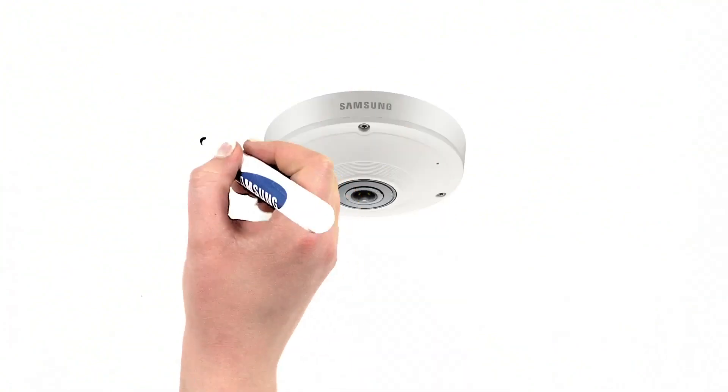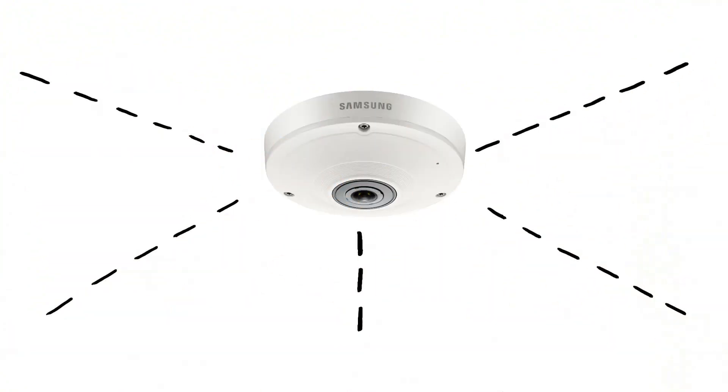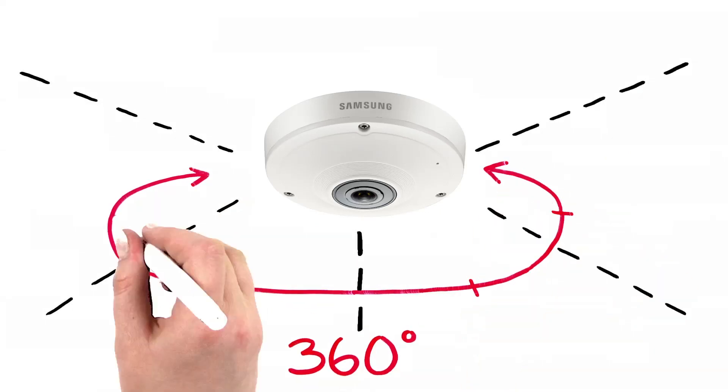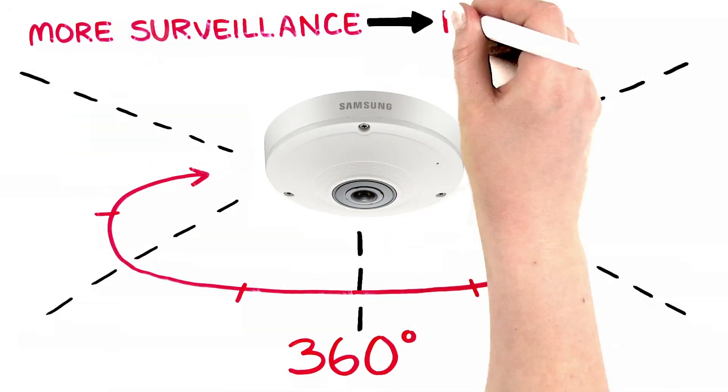Samsung Techwin offers the only kit in the market that includes a fisheye camera. Its 360-degree view provides more surveillance options with fewer cameras.